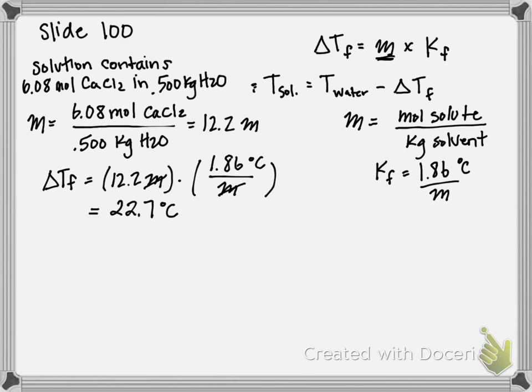So freezing temperature of the solution is equal to the freezing temperature of water minus the change in freezing temperature, which we've already calculated. Therefore, freezing temperature of my solution is 0 degrees C minus 22.7 degrees C, which gives me a freezing temperature of this new solution of negative 22.7 degrees Celsius.